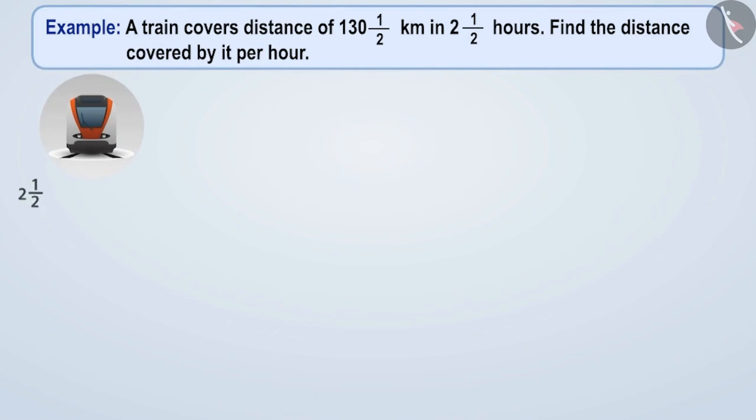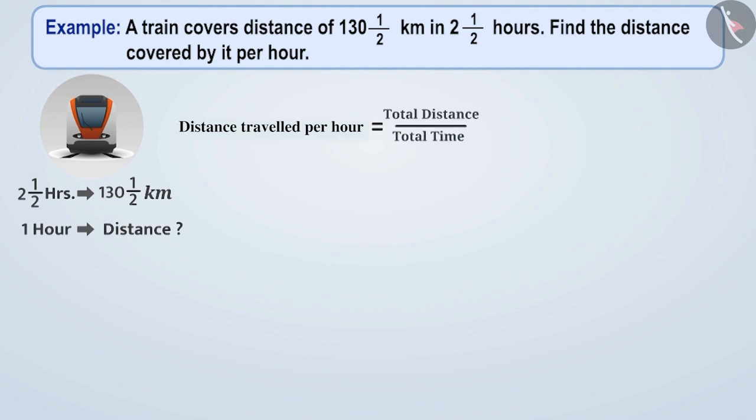A train covers a distance of 130.5 km in 2.5 hours. Find the distance covered by it per hour. To find the distance the train would be covering per hour, we have to divide the total distance covered by the train by the total time.